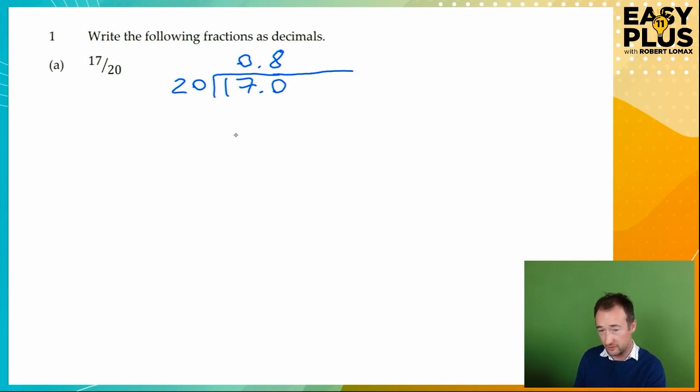What's left over? Well, we could do a long division here, but let's keep it simple and keep it all in one line. So what's left over is 10, and 20 goes into 100 five times. So the answer is simply 0.85.